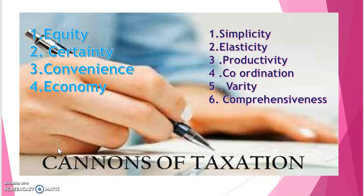Now we discuss the canons of taxation. By canons of taxation, we simply explain that these are the characteristics or qualities which a good tax system should possess. Canons of taxation are related to the administrative part of tax. According to Adam Smith, he explained the first four principles or canons of taxation. The first four canons are: canon of equality or equity, canon of certainty, canon of economy, and canon of convenience.